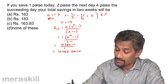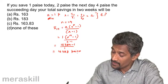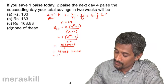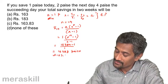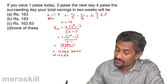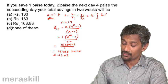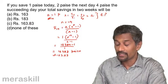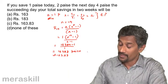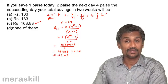Since the answer is required in rupees, we divide by 100: 16,383 paise = ₹163.83. This matches the expected answer.